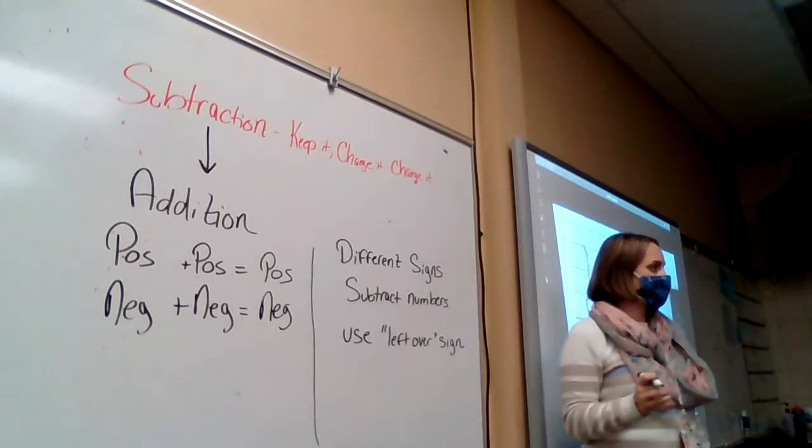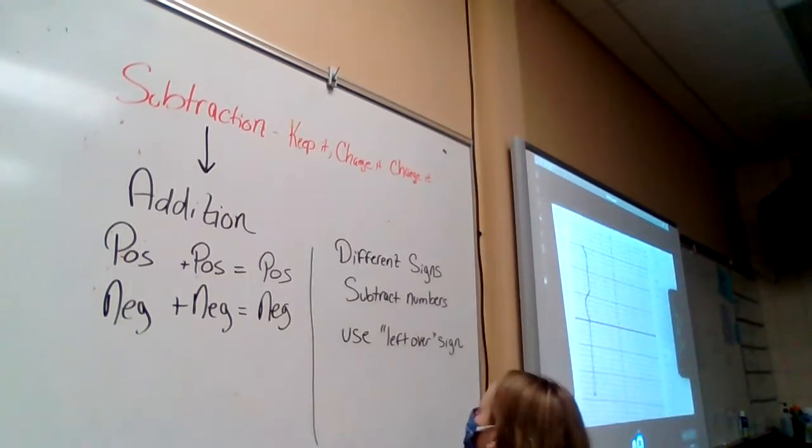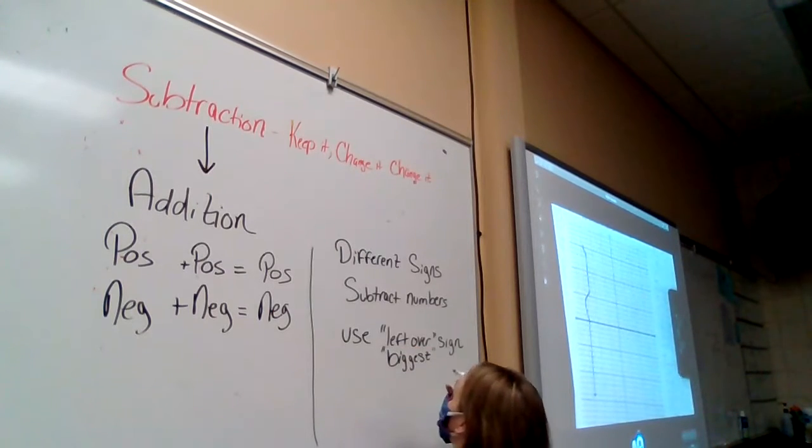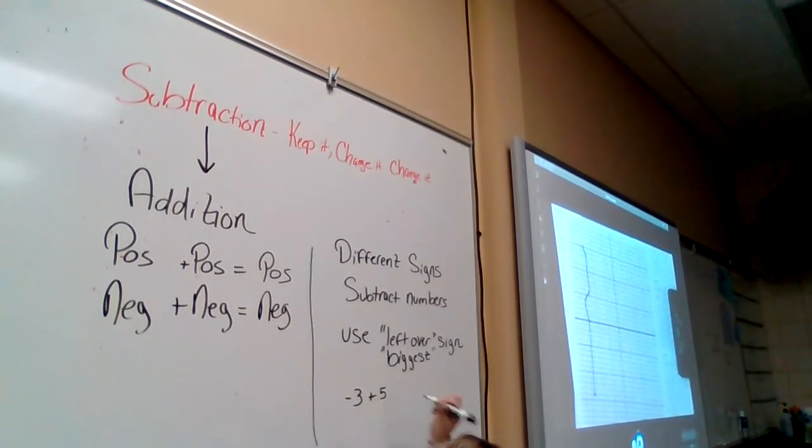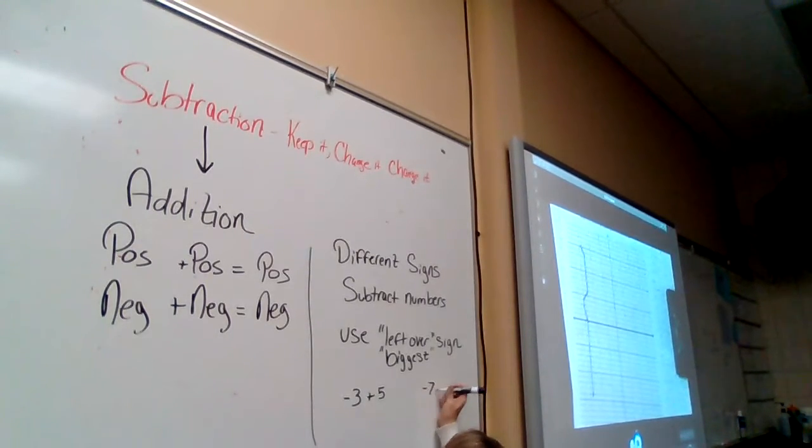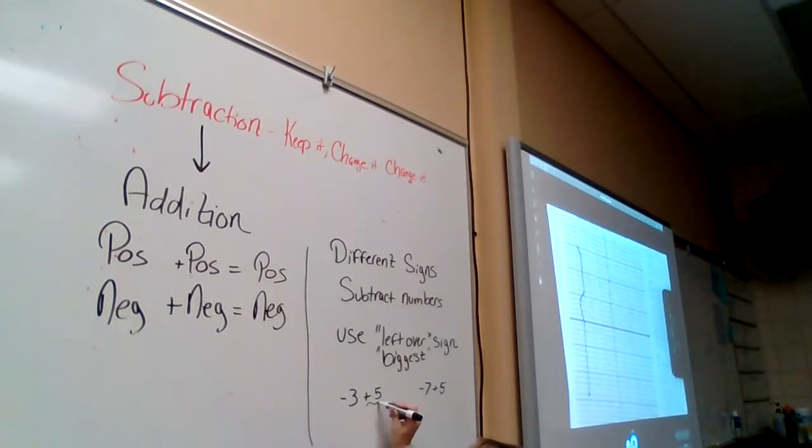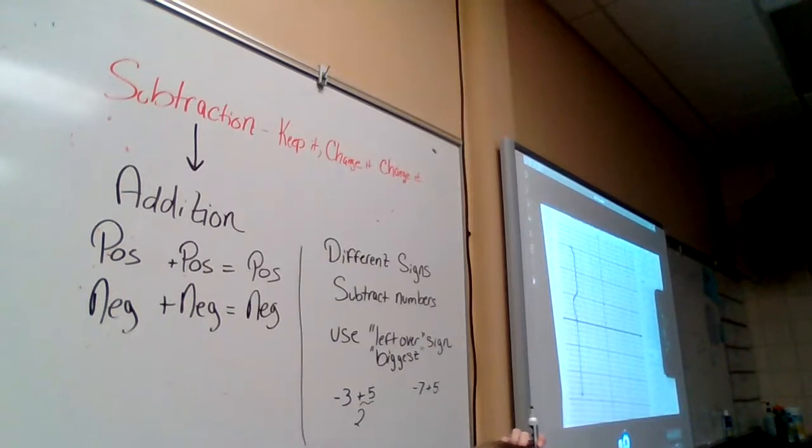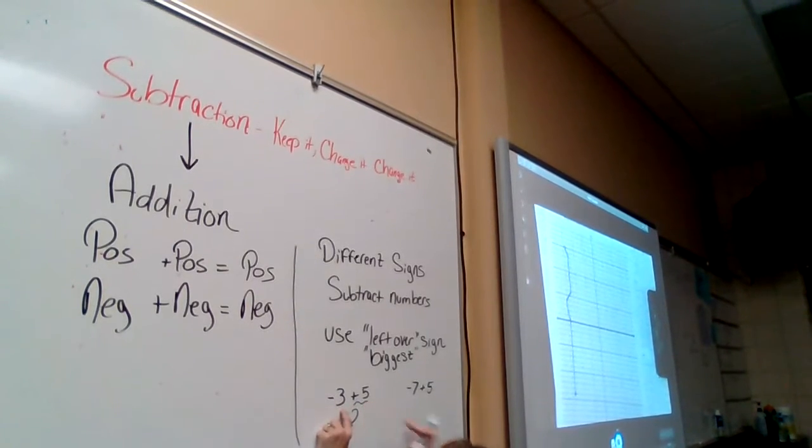Use the left over sign. Let's say negative 3 plus 5, and then we'll say negative 7 plus 5. In this first one, which one is bigger, the 3 or the 5? Five. So we'll use that sign. Then we're going to subtract. 5 minus 3 is 2.